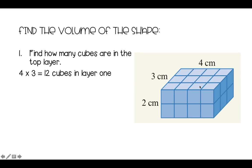And if we count here, we go 1, 2, 3, 4, 5, 6, 7, 8, 9, 10, 11, 12. So we can see here we've got 12 in the top layer. But that's just one layer. There's two layers here. So what we're going to do is find how many cubes would be in two layers.